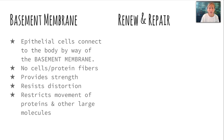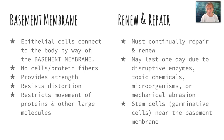Let's talk a little bit more about the basement membrane. Epithelia connect to the body by way of this membrane and are attached to connective tissues. The basement membrane doesn't have any cells, but is just a network of protein fibers. It provides strength, resists distortion, and restricts movement of proteins and other large molecules. The epithelium is able to renew and repair itself because it has stem cells or germative cells near that basement membrane that can replace any cell lost due to disruptive enzymes, toxic chemicals, microorganisms, or some kind of mechanical operation.